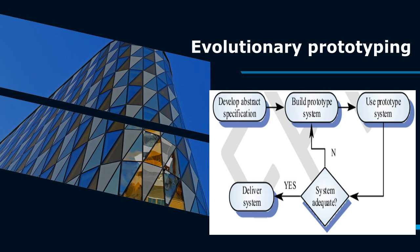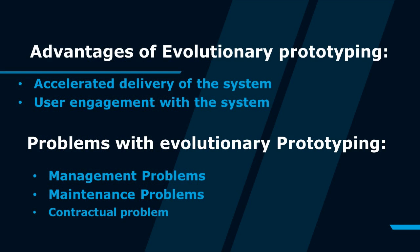In evolutionary prototyping, verification is impossible as there is no specification; validation means demonstrating the adequacy of the system. Advantages include accelerated delivery of the system — rapid delivery and deployment are sometimes more important than functionality or long-term software maintainability. Another advantage is user engagement: the system is more likely to meet user requirements, and users are more likely to commit to the use of the system.